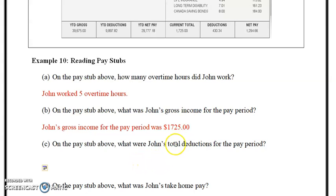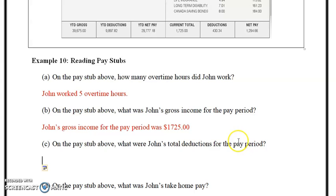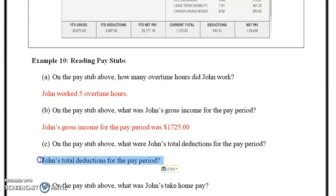What were John's total deductions for the pay period? The total deductions are listed here — adding up CPP, EI, income tax, life insurance, long-term disability, and Canada Savings — coming to $430.34. So John's total deductions for the pay period were $430.34.